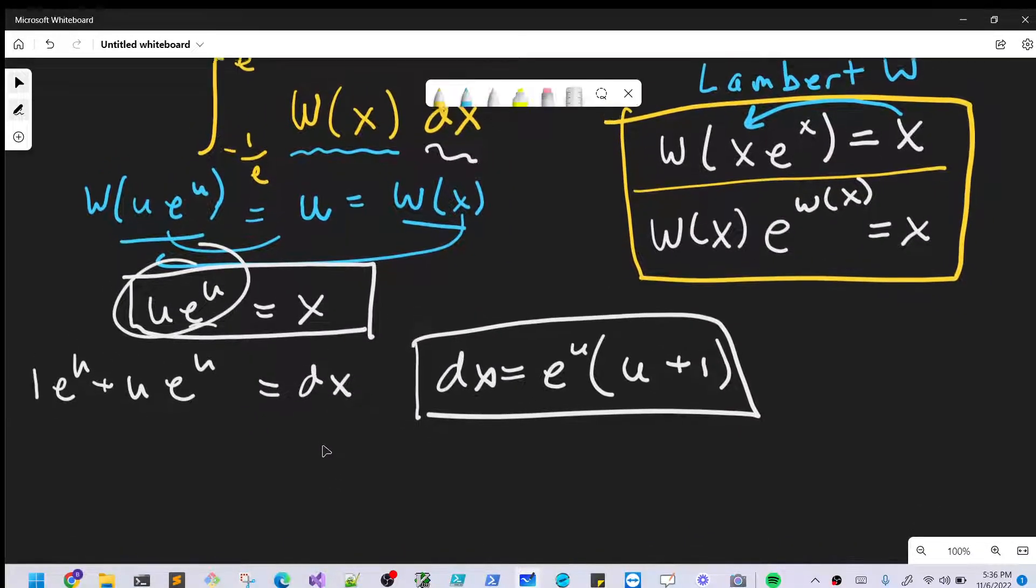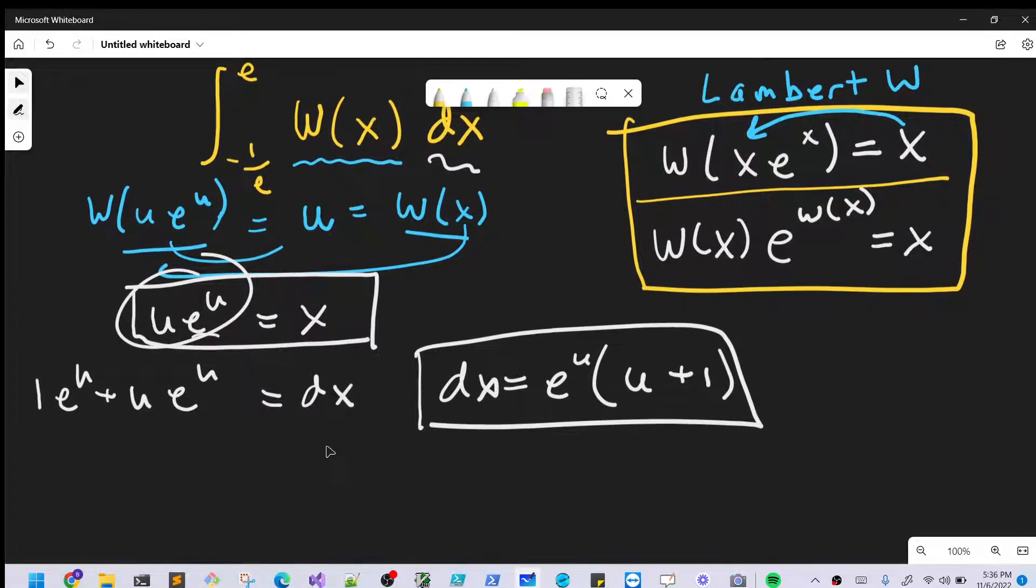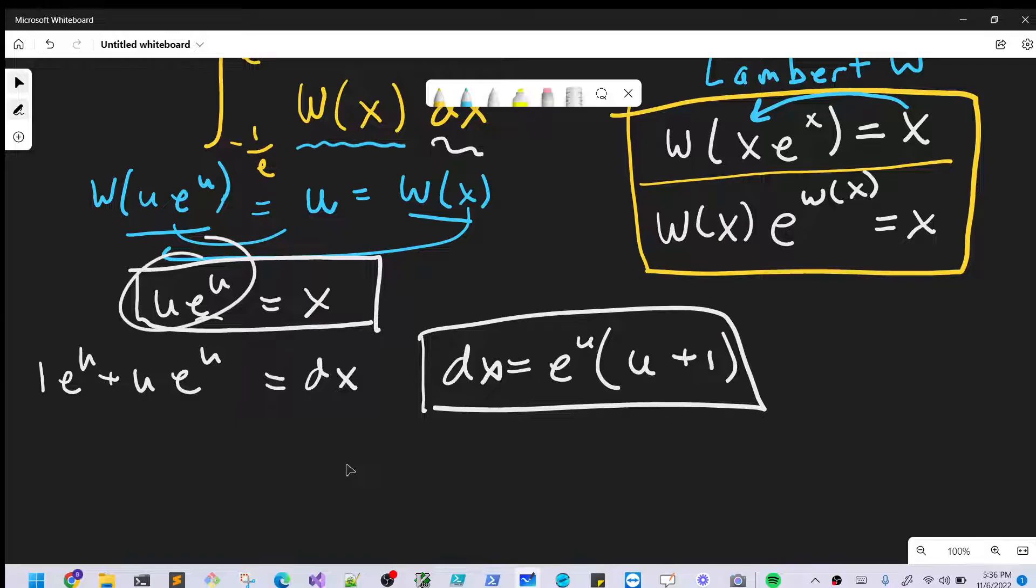So now I'm going to rewrite our integral in terms of u. And when I do that, I'm going to remove the limits of integration just because I'm going to come back to that later. So rewriting this, we're going to have our W(x) is u. So we're going to have u, and then we have our dx value, which is going to be e to the u, u plus 1, du.